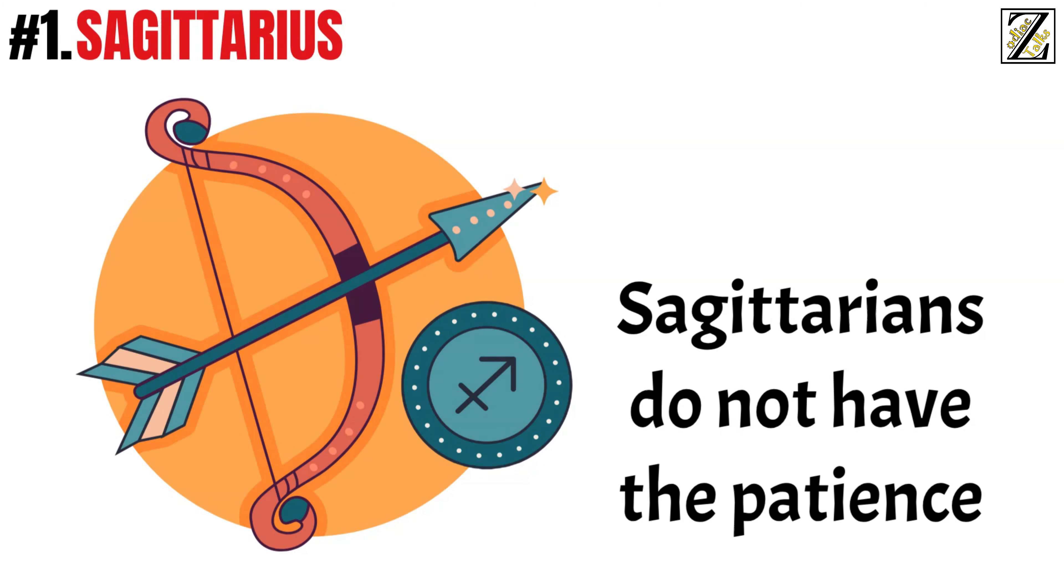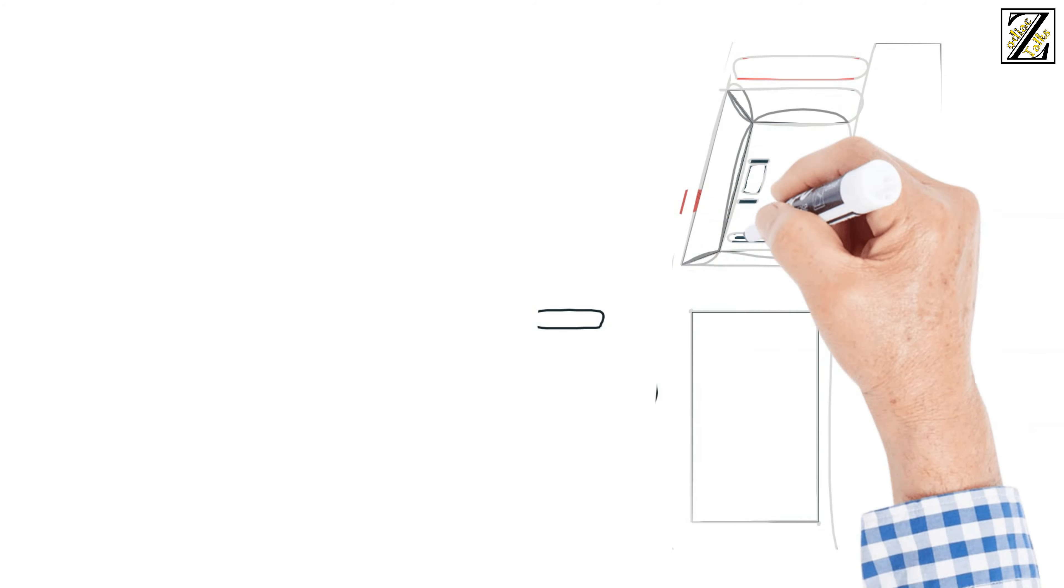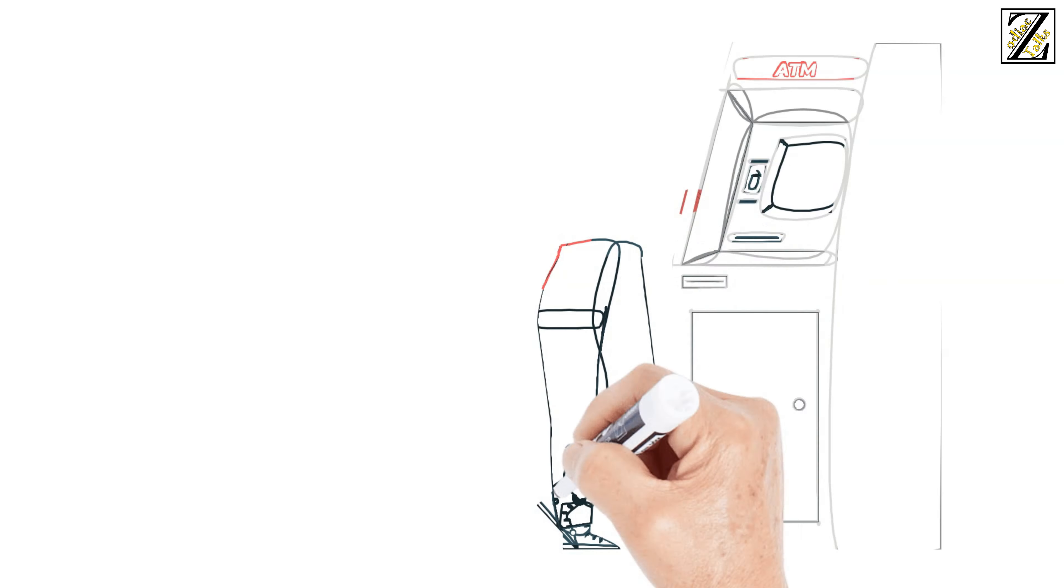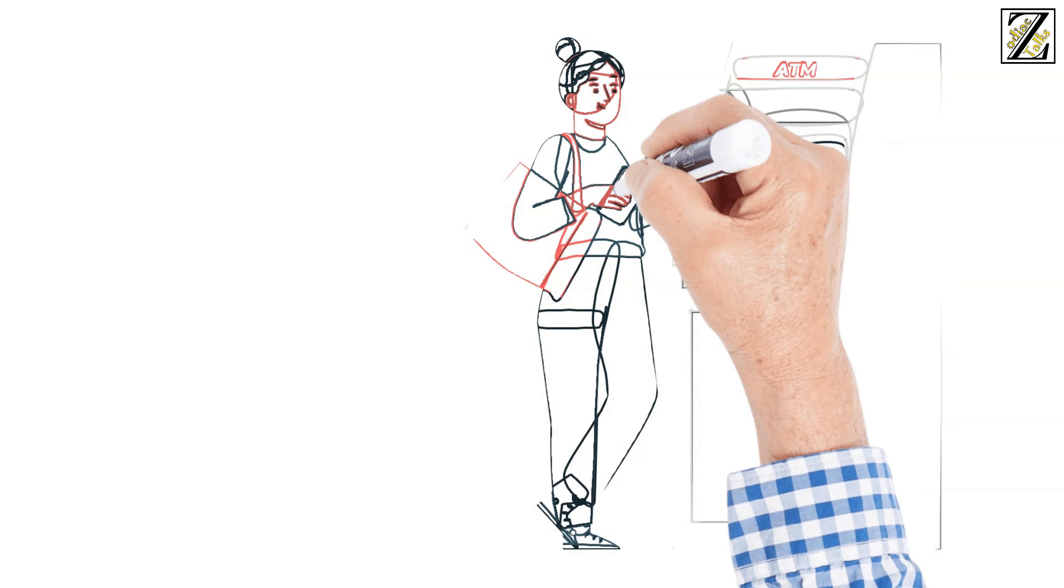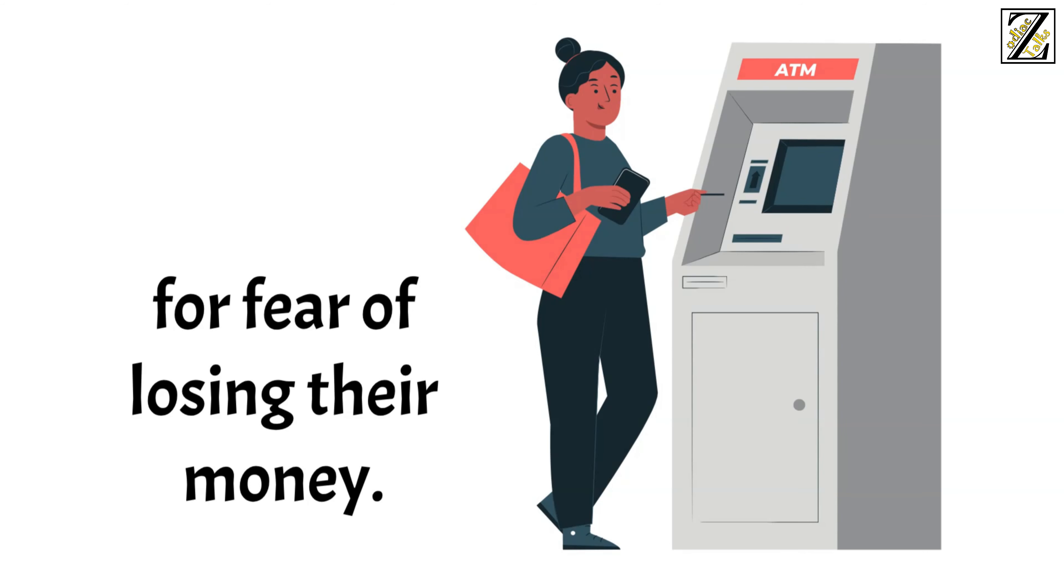Sagittarians do not have the patience or the will to cut corners, as life is happening now and focusing on tomorrow is a waste of time. They often overdraw their credit cards, but this is not enough to dampen their spirits. They'd rather live this way than be stingy and miserly for fear of losing their money.